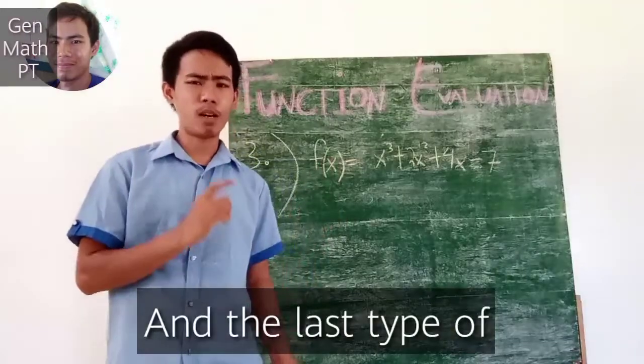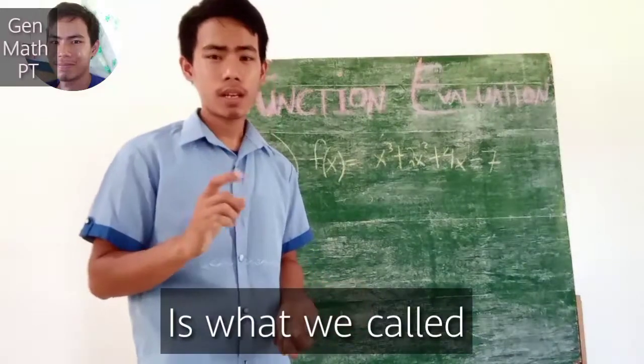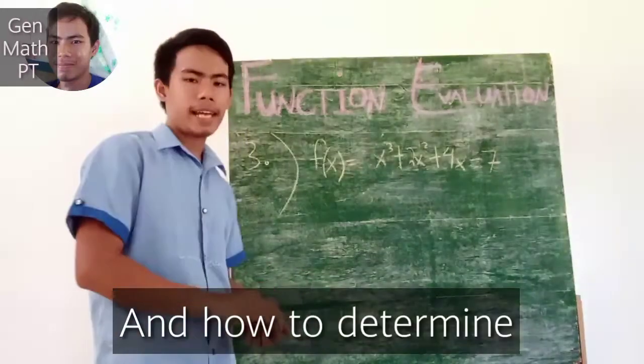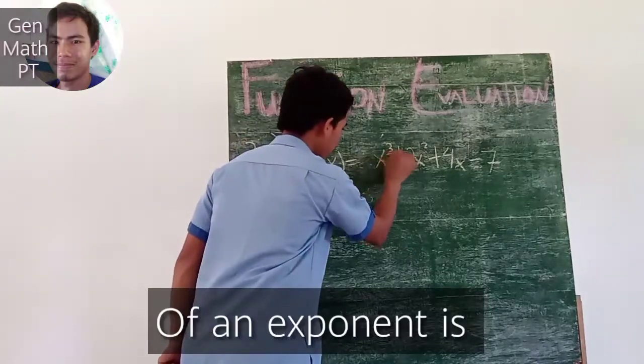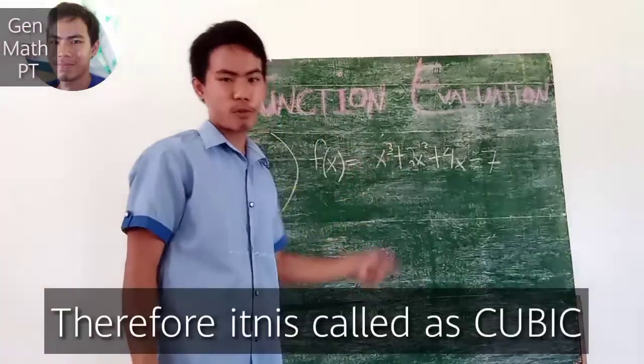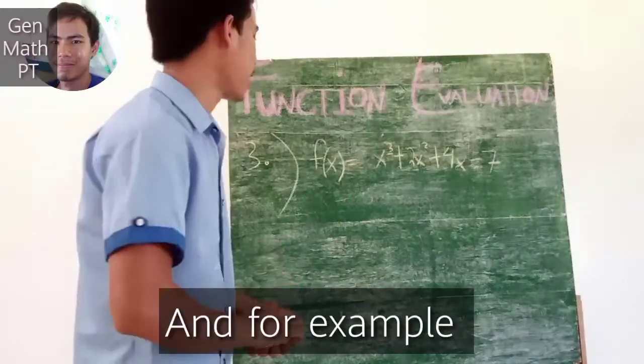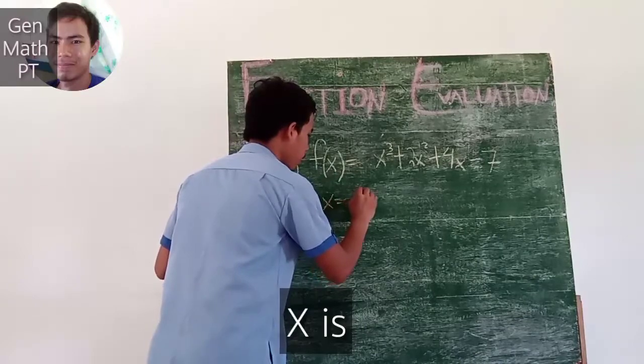The last type of function classification is what we call cubic. How to determine if the equation is cubic? The highest degree of an exponent is 3. Therefore, it is called cubic. For example, the x is 2.